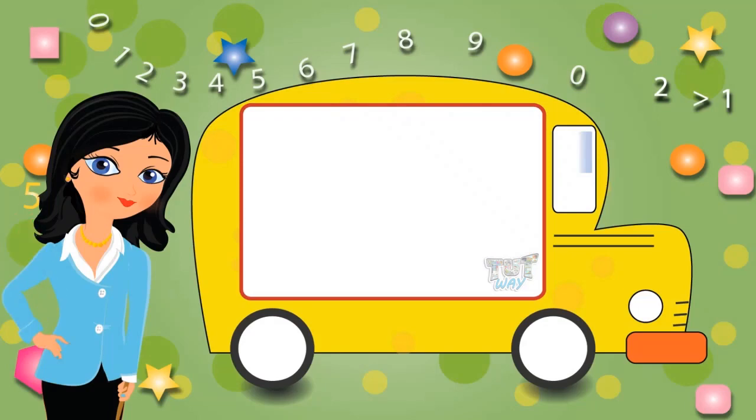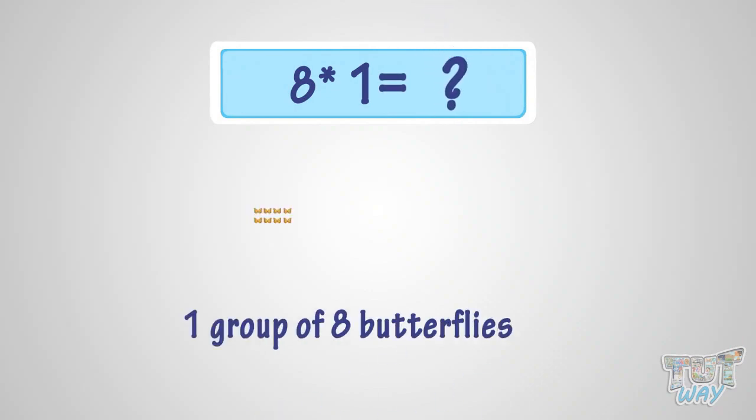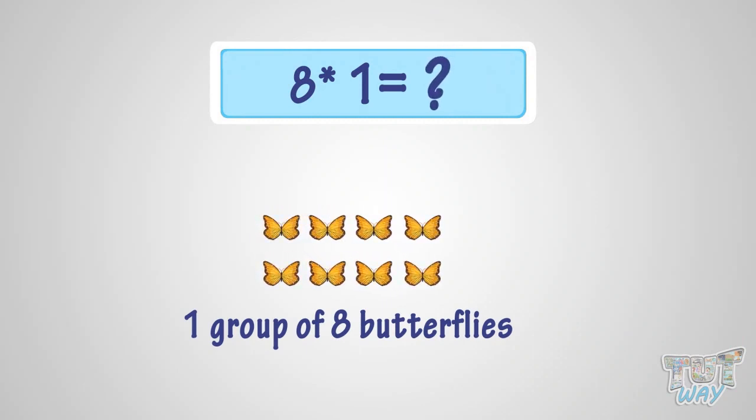Hi kids! Today we will learn the multiplication table of 8. What is 8 multiplied with 1? It is the same as one group of 8 butterflies. So it is 8 butterflies. That is, 8 multiplied by 1 is 8.